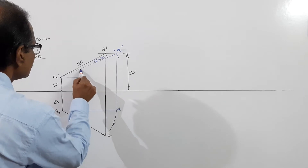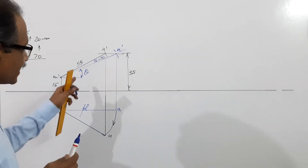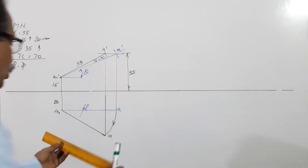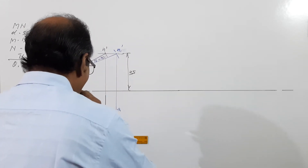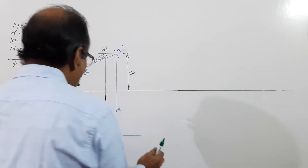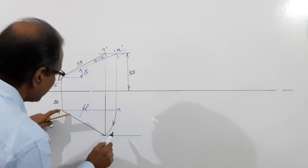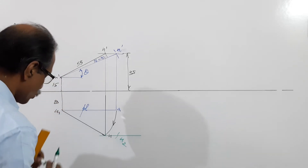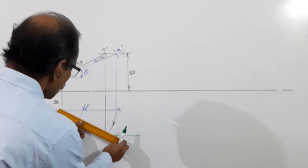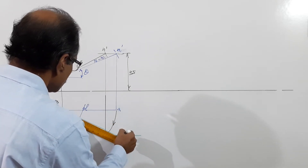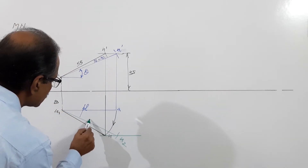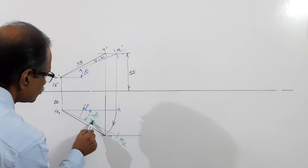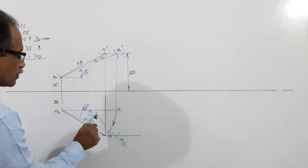This angle is theta. When the elevation equals true length, it will make theta to the XY line. Now you have to find out phi. You draw a locus through N, take the true length 70 in your compass and with M as center cut an arc. This is N2. Since that distance is true length 70, this angle is called phi.